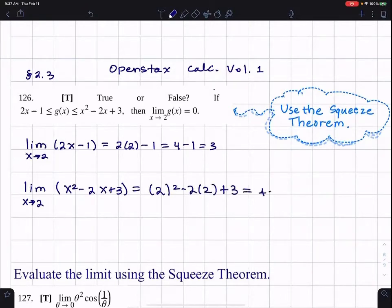So that's 4 minus 4 plus 3 is 3. So they both have the same limit.